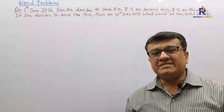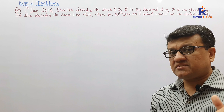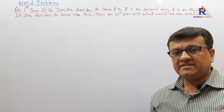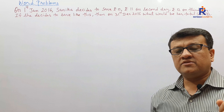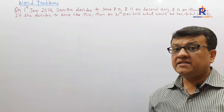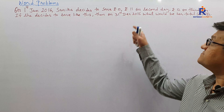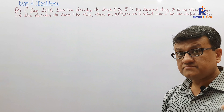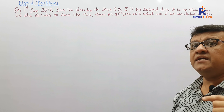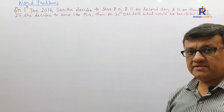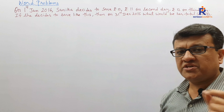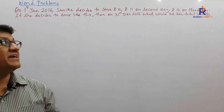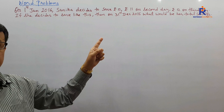She starts off with rupees 10, next day 11 — what is the difference? 1. Next day 12 — what is the difference? Again 1. So the savings of Sanika form an AP with A = 10 and common difference D = 1.